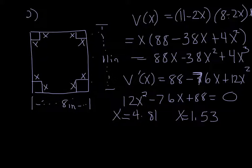Now if I put 4.81 in for my width, so in other words I'm taking away 4.81 on each side, I'm actually going to run out of material so that one can't work so the amount that we're going to cut from each corner to maximize the volume would be 1.53.